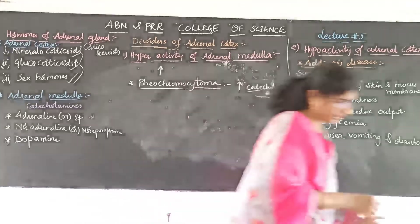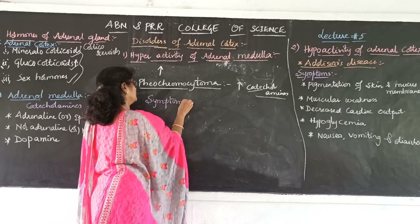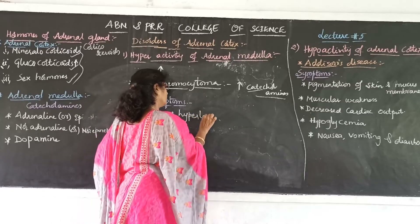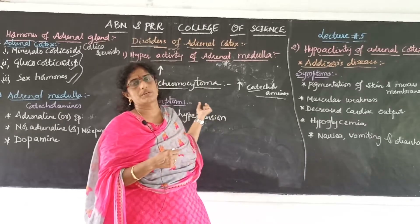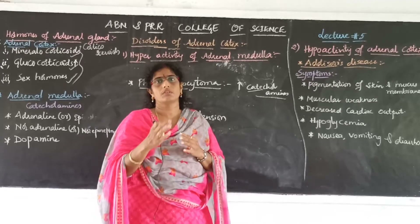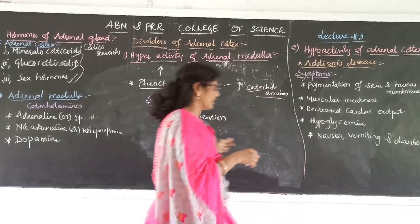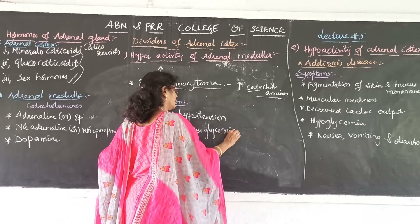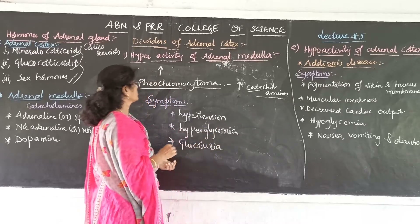The symptoms of pheochromocytoma include: first and foremost, hypertension; inability to sleep; and psychoneurotic symptoms. Patients, especially children, will be very nervous and will have exaggerated triggering responses. Hyperglycemia is also a primary symptom — elevated blood glucose levels are found in pheochromocytoma.